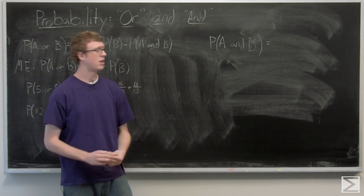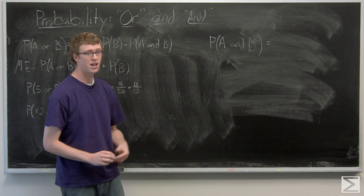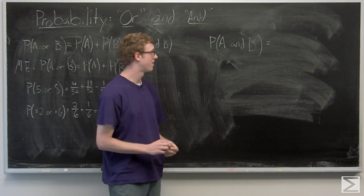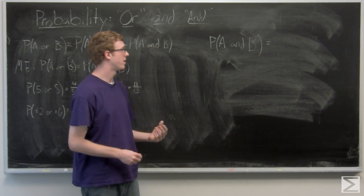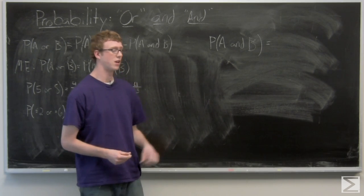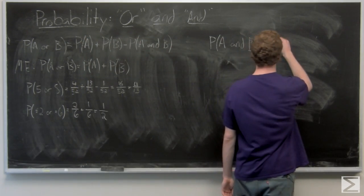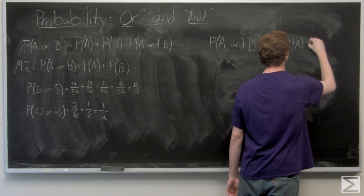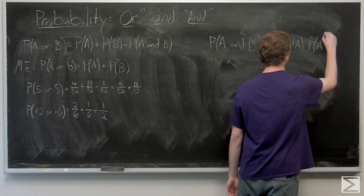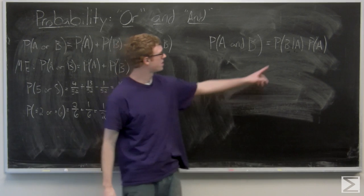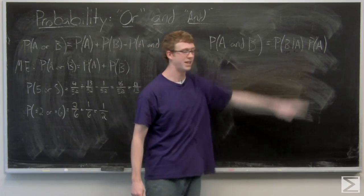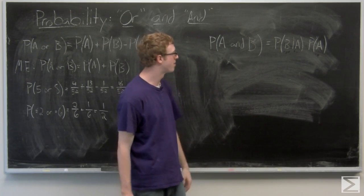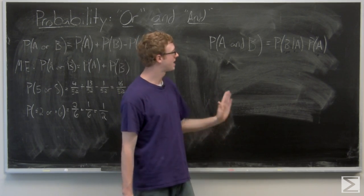Now we're going to look at calculating the probability of A and B occurring. This deals with conditional probabilities, which we'll take a look at in the next video. Conditional probability is the probability of one event happening given that the other event does happen. The notation is the probability that B occurs given that A occurs, times the probability of A. We can also write this as the conditional probability of A given B, times the probability of B.